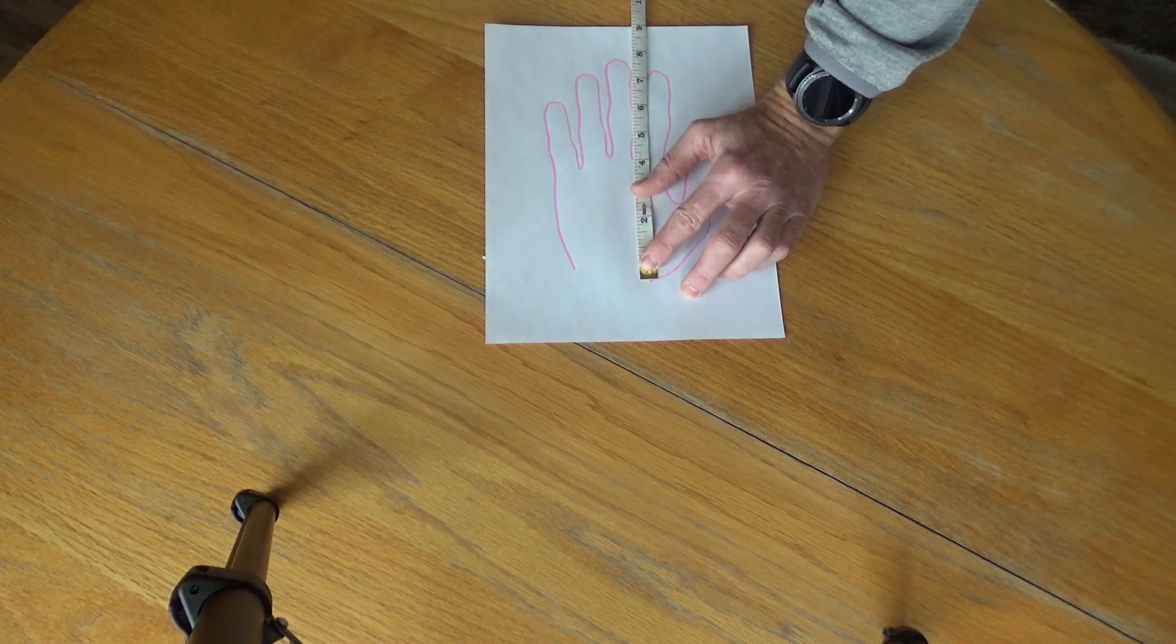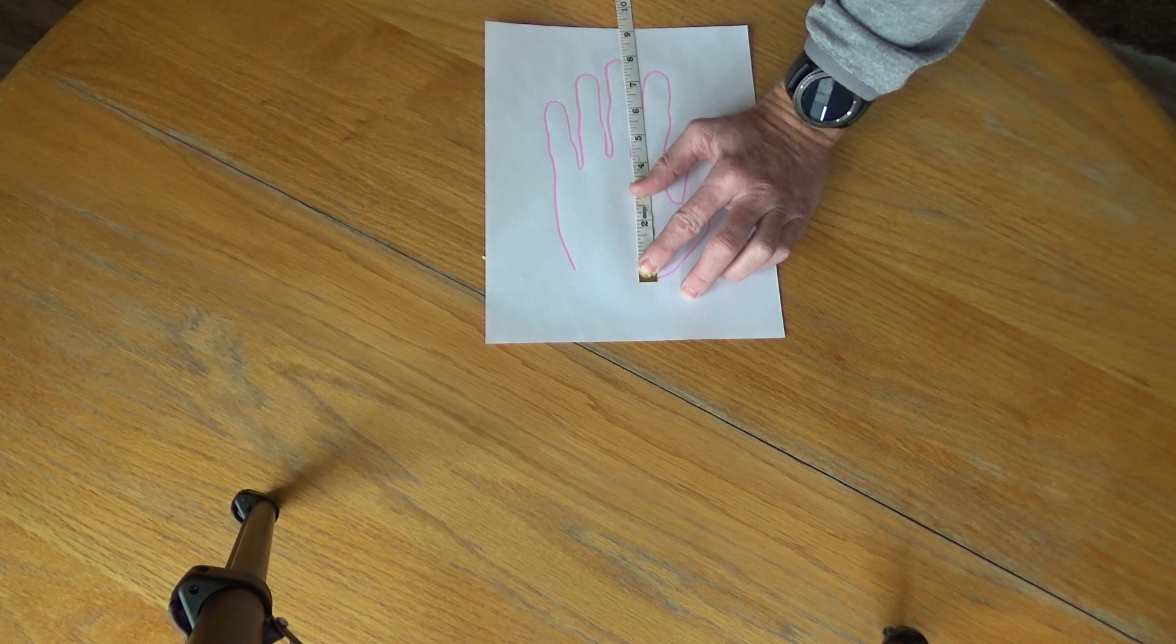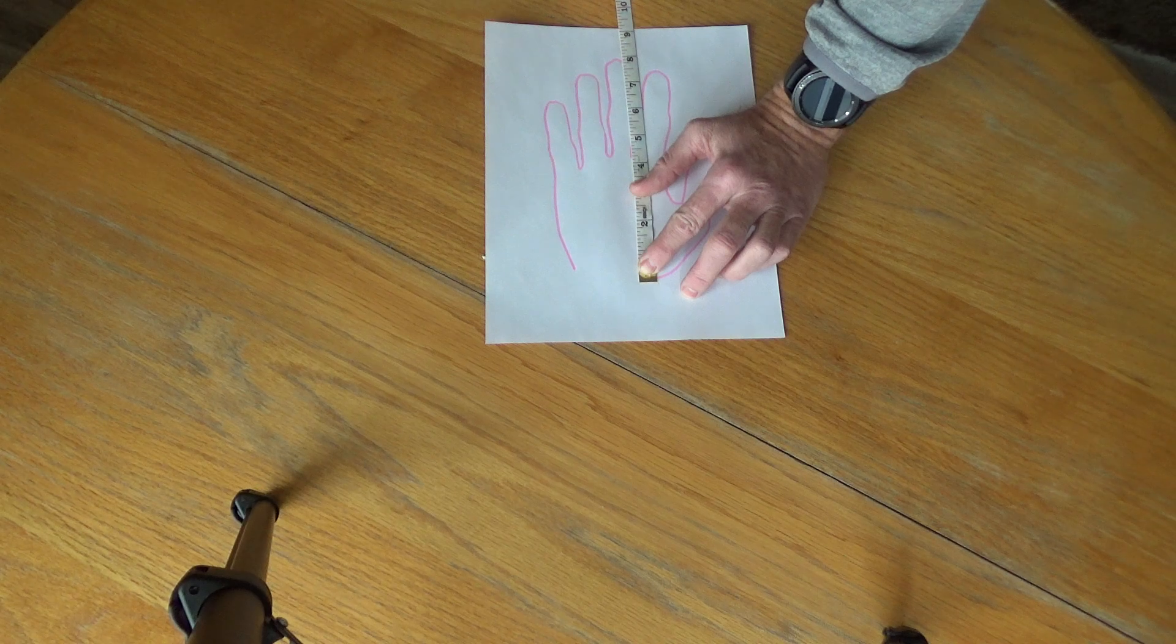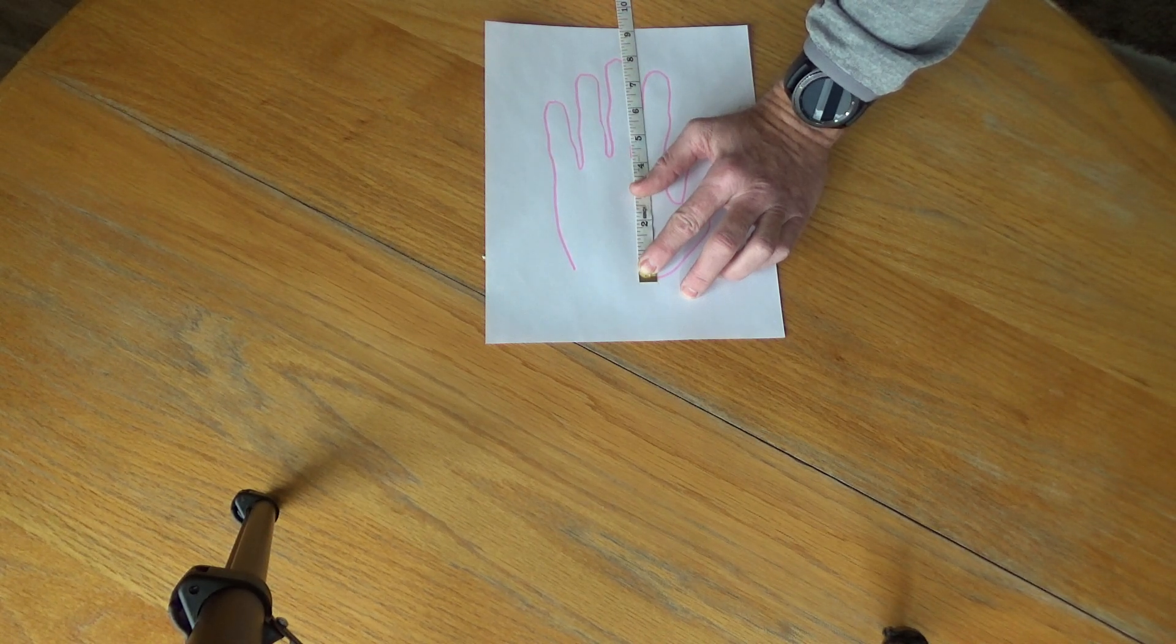So from the bottom of your wrist to the top of the second finger on your hand will give you the size you need when you add one to that number. In my case, it's eight, so my size is a nine.